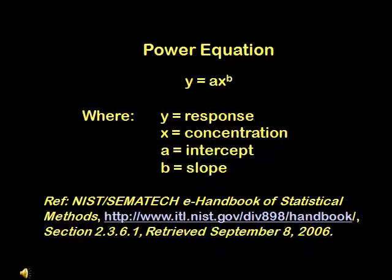Be sure to look closely at this equation, as b is the slope and not the intercept as is seen in a typical linear equation. It is important to note that the intercept is multiplied by the concentration and that the exponent is the slope.